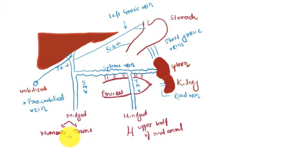The midgut supplies the intestine up to two-thirds of the transverse colon, and its main function is absorption of nutrients. Along with nutrients, toxins are also absorbed. It is therefore necessary that nutrients go to the liver for processing and toxins go to the liver for detoxification.